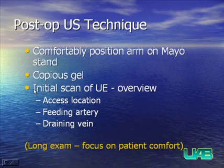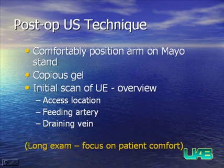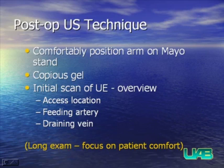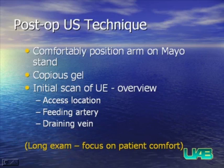When evaluating these after surgery, you need to understand techniques used to optimize the evaluation. The patient should be either sitting or slightly reclined in a comfortable position, with their arm laid out on an instrument stand, usually with the palm up. We use a large amount of ultrasound gel almost as a standoff so that we are not putting undue pressure on the draining vein. Having the surgical note makes it much easier to understand what vessels were anastomosed to create the fistula.